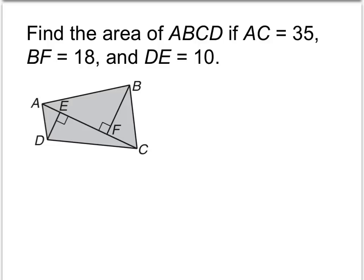Here we want to find the area of this irregular quadrilateral, ABCD. And we know that the length AC is 35 units, BF is 18, and DE is 10.